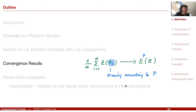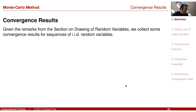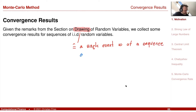In what sense do we have convergence? If I want to use this as an approximation, I will stop at a certain m and I would like to know how close I am to the true result. A thing to keep in mind is that a drawing corresponds to a single event ω of a sequence of iid random variables.